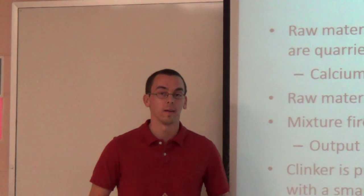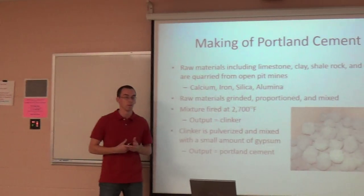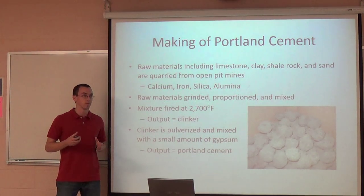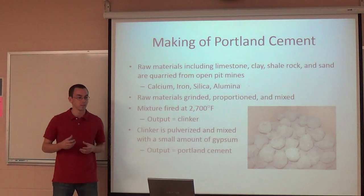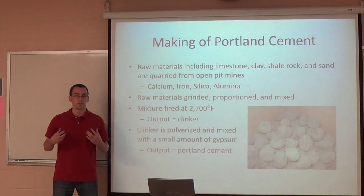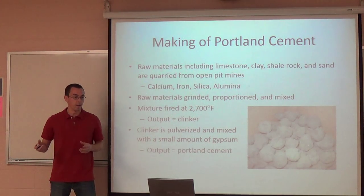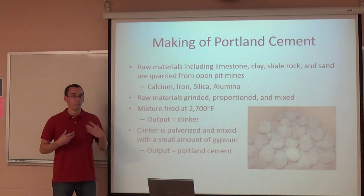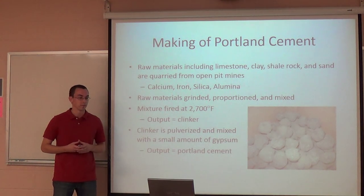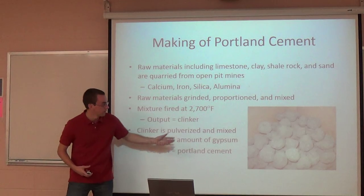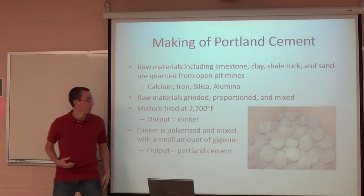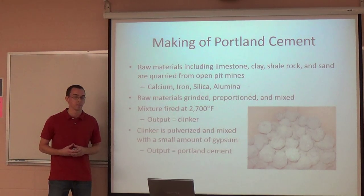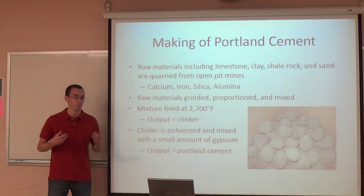How is cement made? First you need your raw materials — usually limestone, clay, and sand — and the elements and compounds you're looking for in those raw materials are calcium, iron, silica, and alumina. Once you have that, you grind it down and proportion it to get the optimal chemical composition. The mixture is then fired at roughly 2,700 degrees Fahrenheit, and the output — which you can see at the bottom right — is called clinker. It's golf ball and baseball sized pellets, and when you smash it up and add a little gypsum, you get Portland cement.